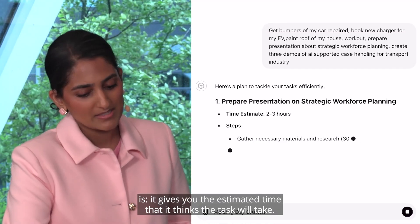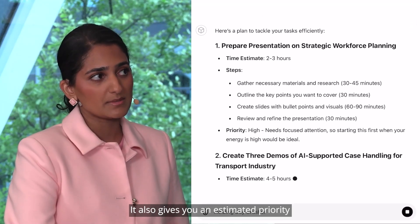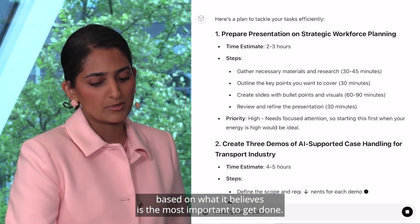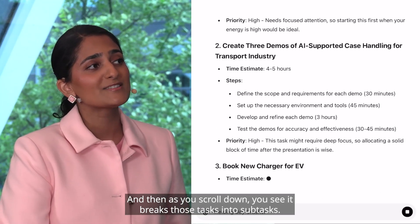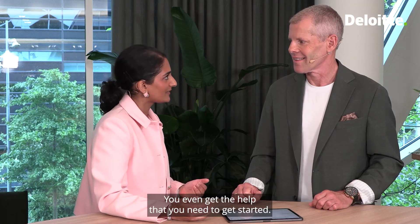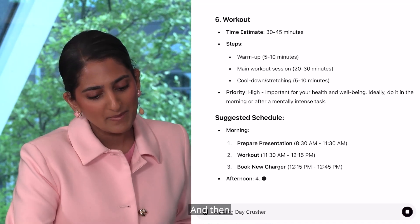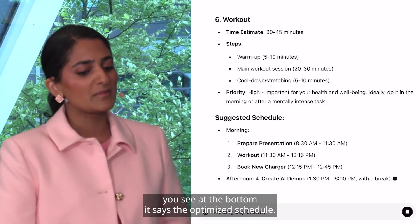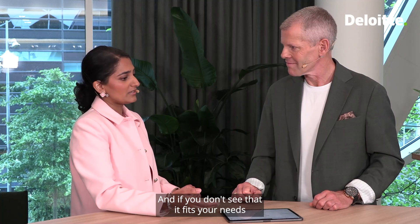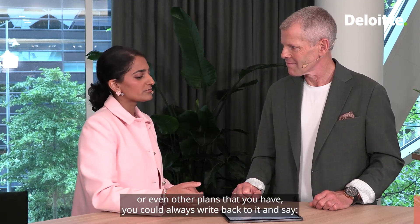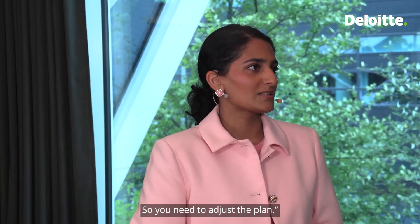What you see here is it gives you the estimated time that it thinks the task will take. It also gives you an estimated priority based on what it believes is the most important to get done. And then as you scroll down, you see it breaks those tasks into subtasks, so you even get the help that you need to get started. If you say you need to write an email, it can give you a draft of the email. And then you see at the bottom, it says the optimized schedule. And if you don't see that it fits your needs or even other plans that you have, you could always write back to it and say, hey, I have this dinner or I have this lunch, so you need to adjust the plan.